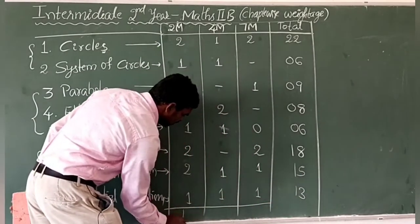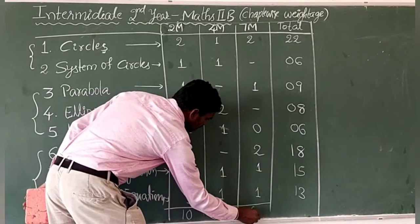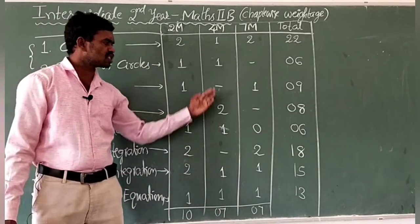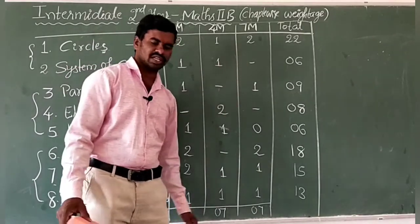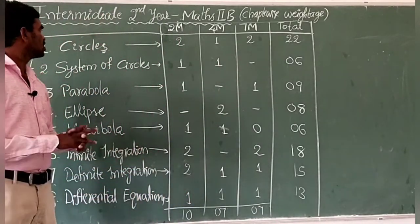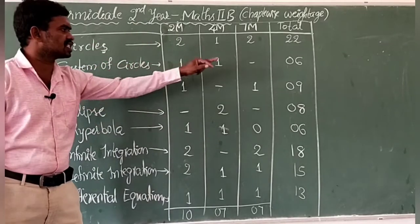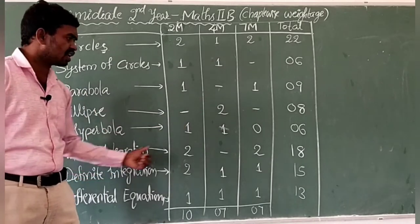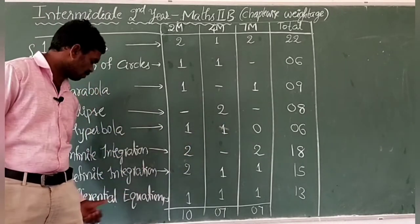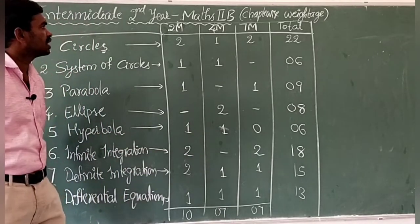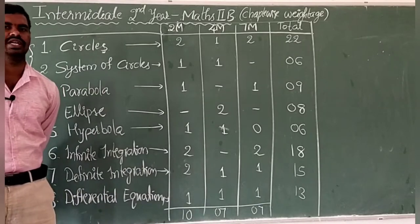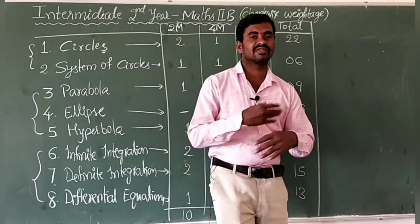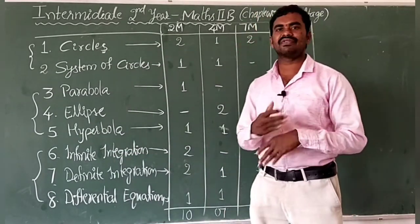This is the total chapter-wise weightage of Maths 2B. There is no choice in 2-mark questions, but in 4-mark questions we get 2 choices and in 7-mark questions we also get 2 choices. Summary: Circles 22 marks, System of Circles 6 marks, Parabola 9 marks, Ellipse 8 marks, Hyperbola 6 marks, Indefinite Integration 18 marks, Definite Integration 15 marks, Differential Equations 13 marks.